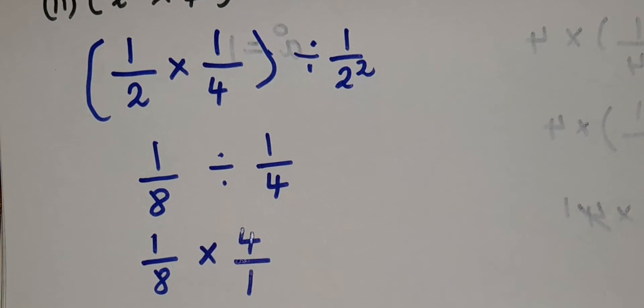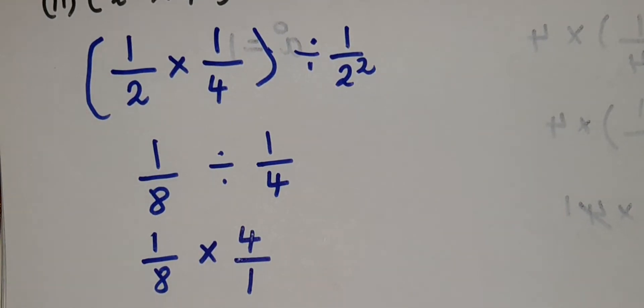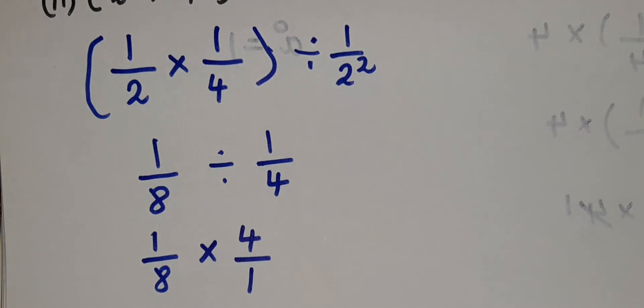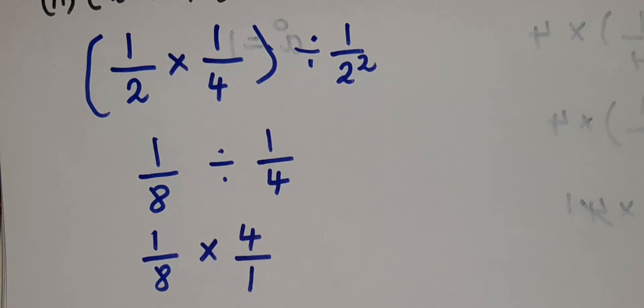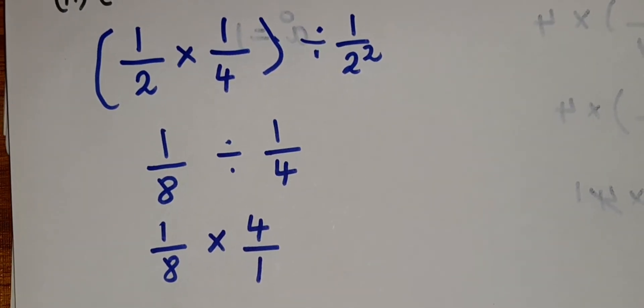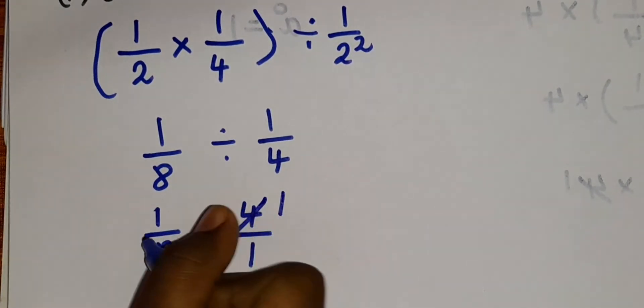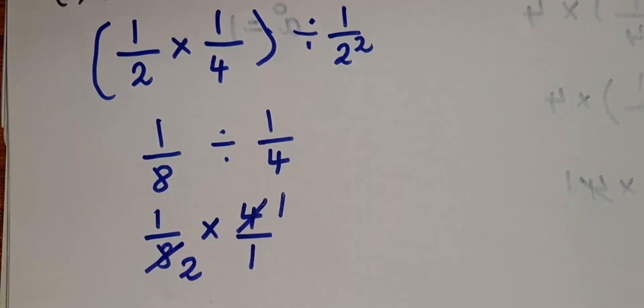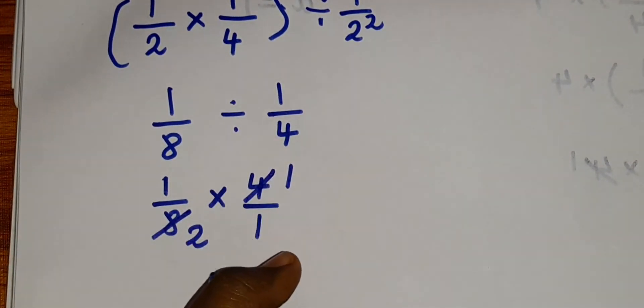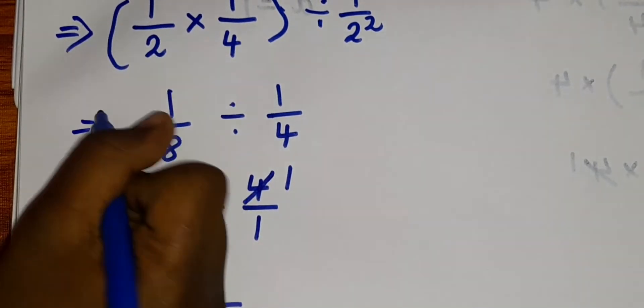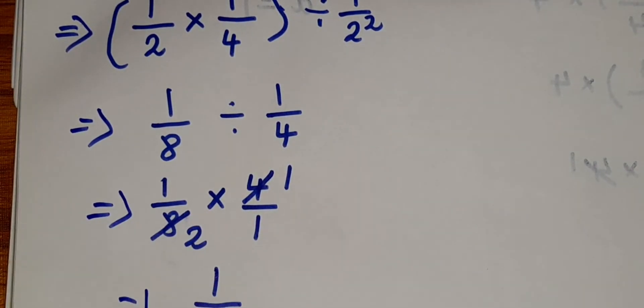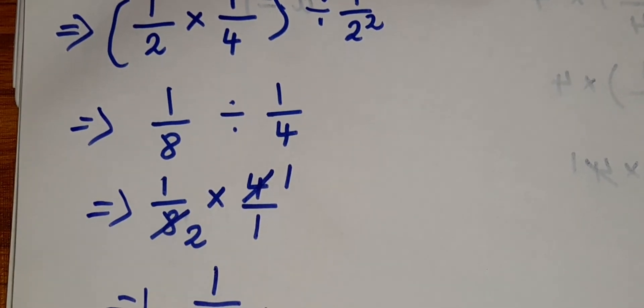So here you can see we can cancel these numbers. Let's cancel it. 4 1's are 4, 4 2's are 8. So now what we have, 1 into 1 is 1, 2 into 1 is 2, which means our answer is 1 by 2.